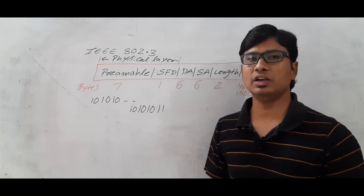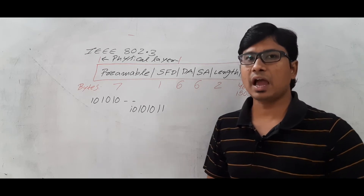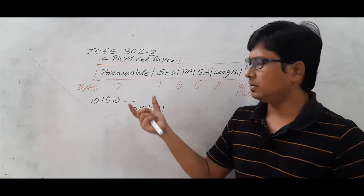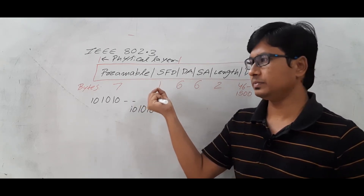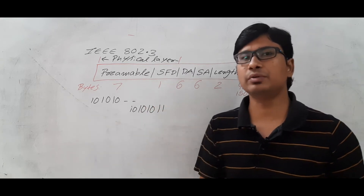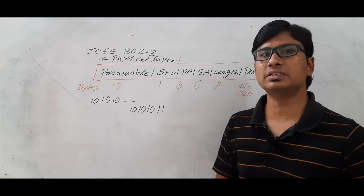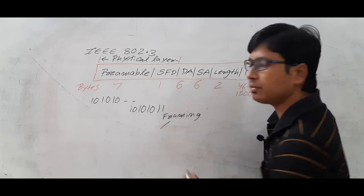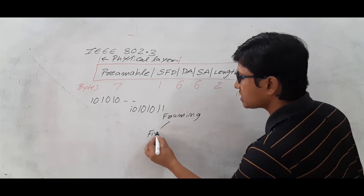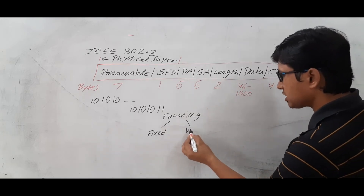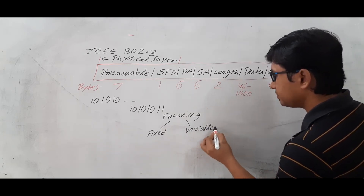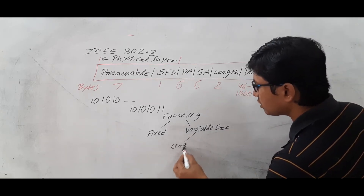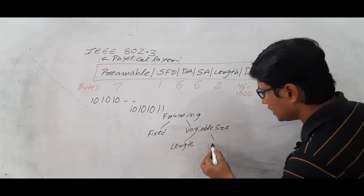The SFD, or start frame delimiter, is used to indicate that the frame is starting. In Ethernet framing, we have discussed that framing can be done in two ways: fixed size framing and variable size framing. In variable size, we can have variable length frames with an end delimiter. Each frame should have boundaries, which you determine using the start frame delimiter and end delimiter.